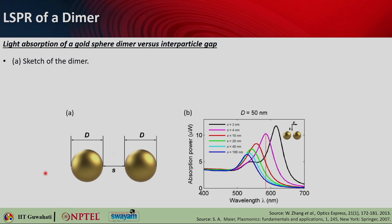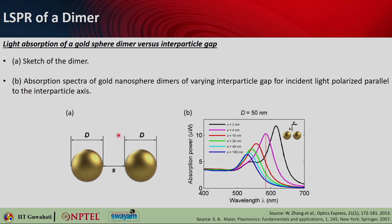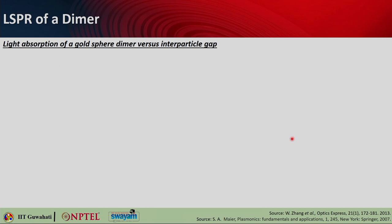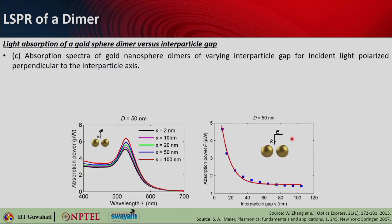When two nanoparticles come together (a dimer), the separation between them plays an important role. Looking at the absorption spectrum of a dimer with electric field polarized along the dimer axis: as separation decreases from 100 to 2 nm, there is a very strong nonlinear interaction causing significant redshift and stronger resonance. The near fields of the particles interact strongly, changing the overall plasmon resonance of the coupled system.